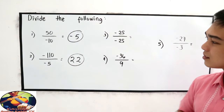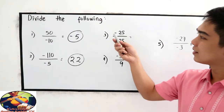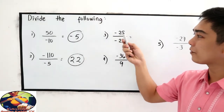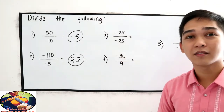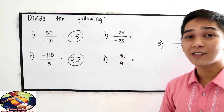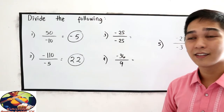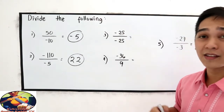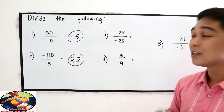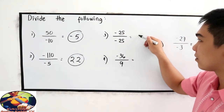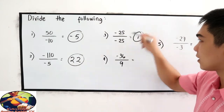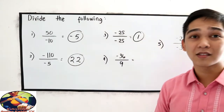Next, negative 25 divided by negative 25. Like signs, so the quotient is positive. 25 divided by 25 is 1, so the answer is positive 1.